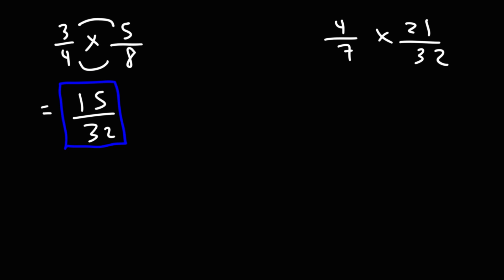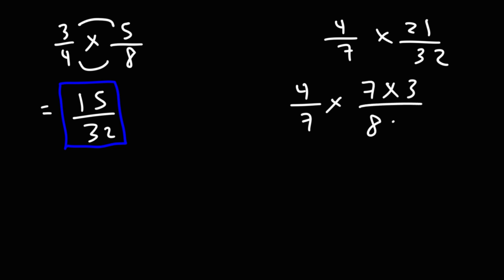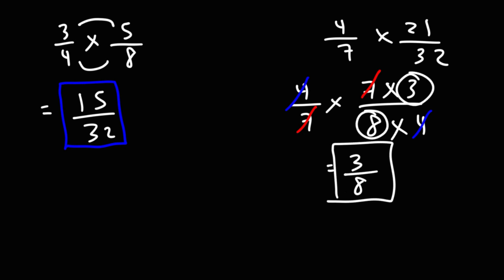For the second example, 4 times 21 is a big number and 7 times 32 is also a big number. So before we multiply across, it's better to see if we can simplify the fractions first to cancel out any common numbers. 21 is 7 times 3 and 32 is 8 times 4. We can cancel a bottom number with a top number if they're identical. We can cancel out the 7 and the 4, and we'll be left with 3 over 8. It's a whole lot easier to cancel before you multiply if you can.